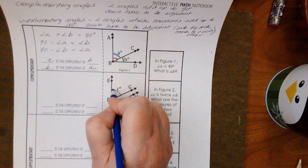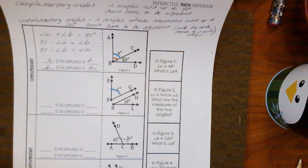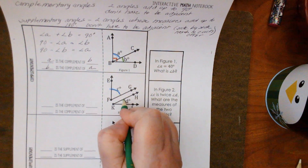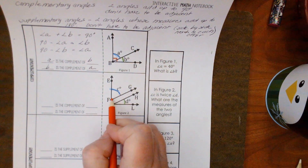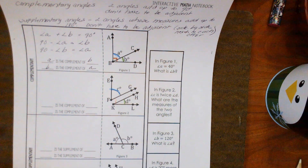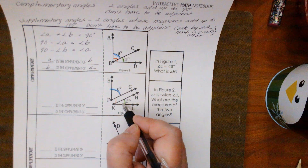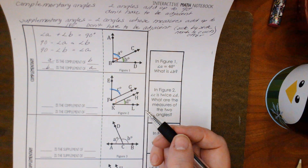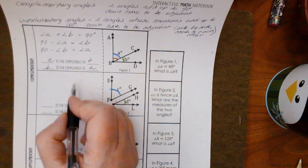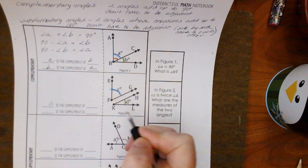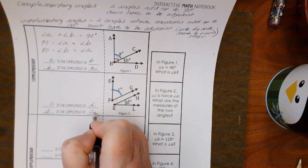So they're not next to each other, but here is C and here is D. This makes the right angle, so that's how you know. When this angle is added to this one, we know that it will add to 90 degrees. So C is the complement of D, and D is the complement of C.